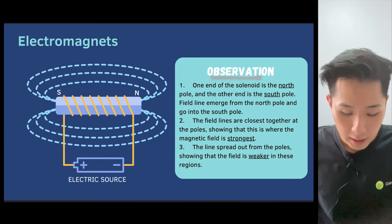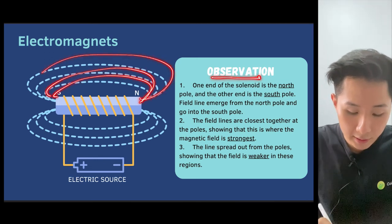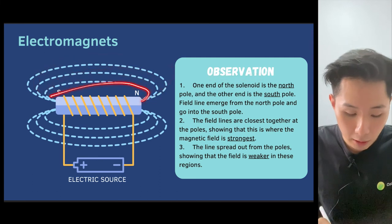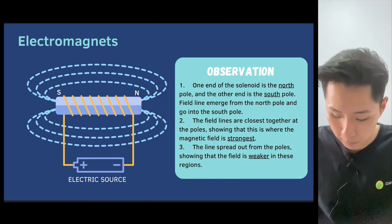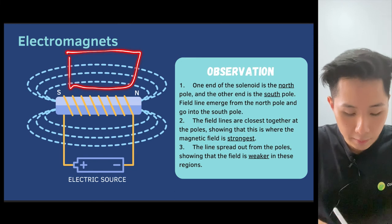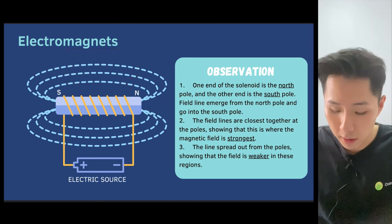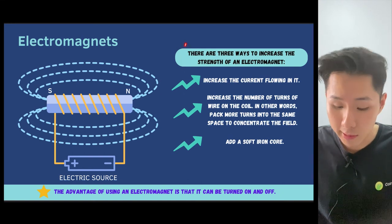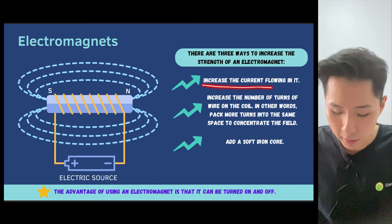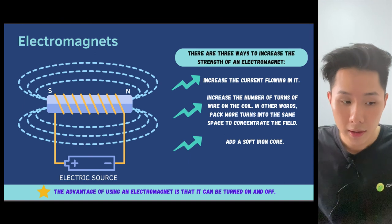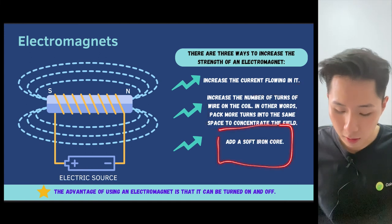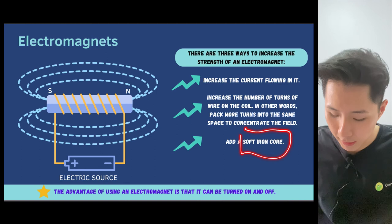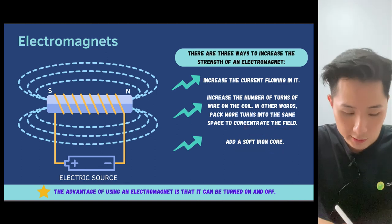For an electromagnet, there is also a magnetic field where field lines come out from the north pole to the south pole. Field lines that are concentrated represent a stronger field, while those more spread out represent a weaker field. There are three ways to increase the strength of an electromagnet: first, increase the current flowing through it; second, increase the number of turns of wire; and third, add a soft iron core, which is a material that can be magnetized and demagnetized easily.